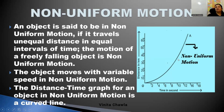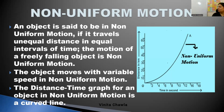If the object covers more distance in less time, it means it is moving faster — because it is covering more distance in less time. But if the object covers less distance in more time, then it is moving slower.